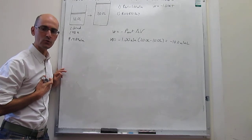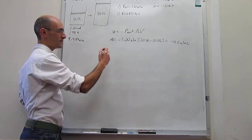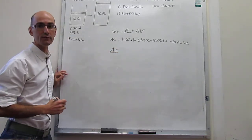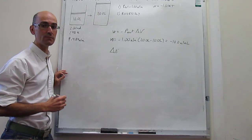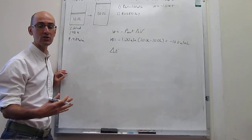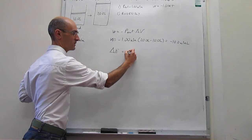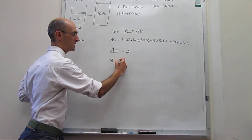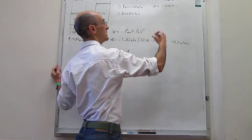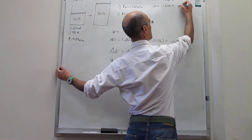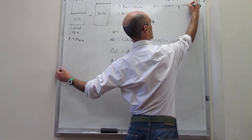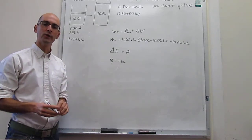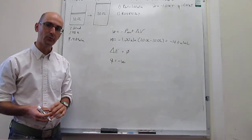We can also calculate heat. Notice that this is an isothermal expansion, and because the internal energy of an ideal gas only depends on temperature, if the temperature doesn't change then the energy does not change either. That means the change in energy is zero and heat is equal to minus work. So the heat in this process is plus 1.01 kJ. That is your regular gas expansion against the constant external pressure.